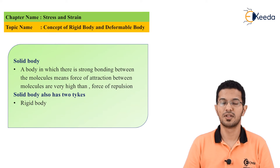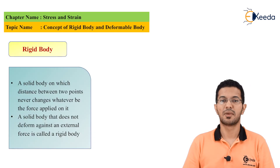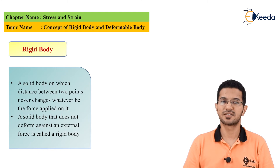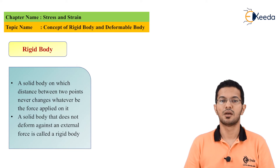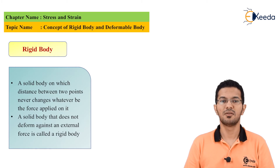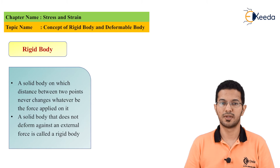We start with a rigid body. In engineering mechanics, we apply a pull or push force on a body resting on a smooth plane. There will be some displacement in the body, but it does not offer any resistance other than friction, and for a smooth plane, friction is also very small.